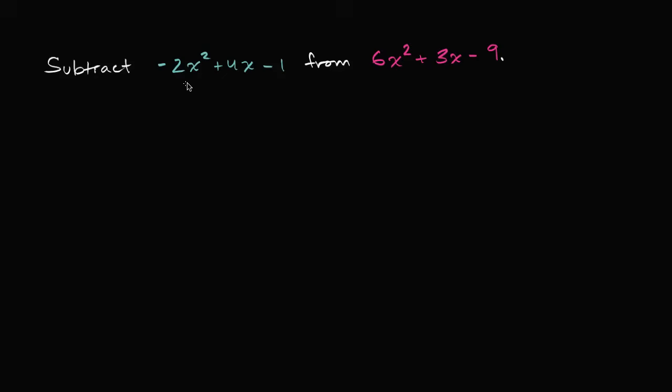We're asked to subtract negative 2x squared plus 4x minus 1 from 6x squared plus 3x minus 9. And like always, I encourage you to pause the video and see if you can give it a go.